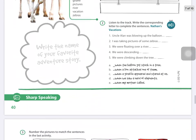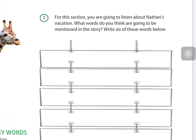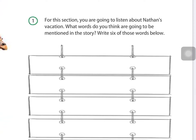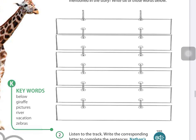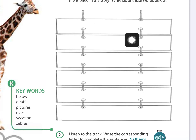This is page 40. In point number one for this section, you are going to listen to a story about Nathan's vacation. The question is: what words do you think are going to be mentioned in this story? Write six of those words in the six boxes provided — one word per box.